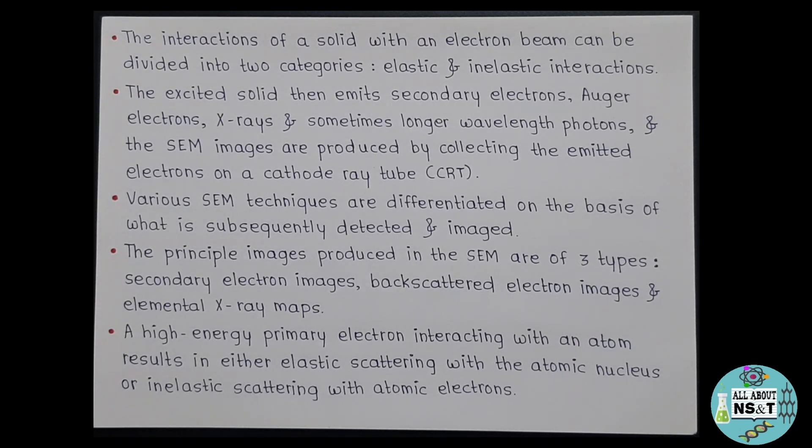Actually, there are various SEM techniques that are differentiated on the basis of what is subsequently detected and imaged. The principal images produced in the SEM are of three types: that is secondary electron images, backscattered electron images, and elemental x-ray maps.